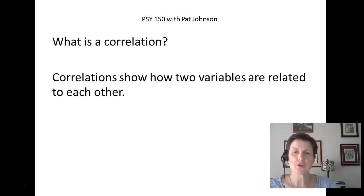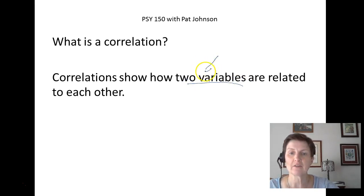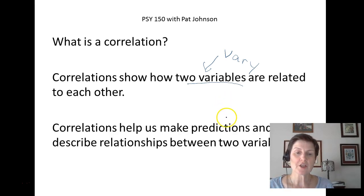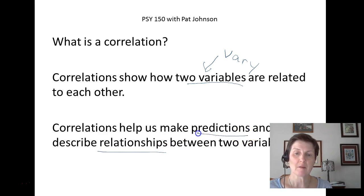Correlations show how two variables are related to each other — in other words, what the relationship is between two different variables. A variable is anything that can vary; the root word of 'variable' is 'vary,' and a variable is anything that can take on different values. What correlations do is help us make predictions and describe relationships between two variables.